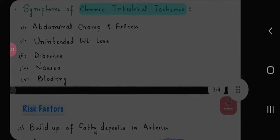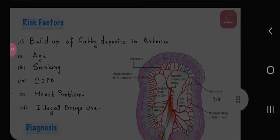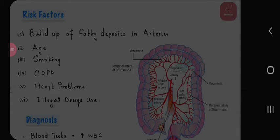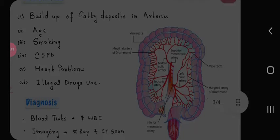Chronic intestinal ischemia presents with abdominal cramps, fullness, unintended weight loss, diarrhea, nausea, and bloating. Risk factors include buildup of fatty deposits in arteries, age, smoking, COPD, heart problems, and illegal drug use.